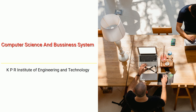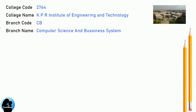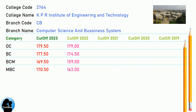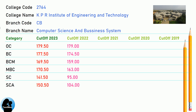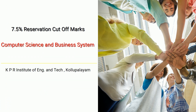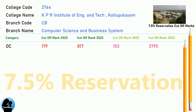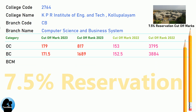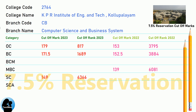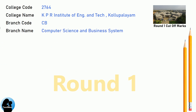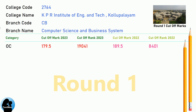BNEA Cut-off for KPR Institute of Engineering and Technology in Computer Science and Business Systems. BNEA Round 1 Cut-off for KPR Institute of Engineering and Technology in Computer Science and Business Systems.